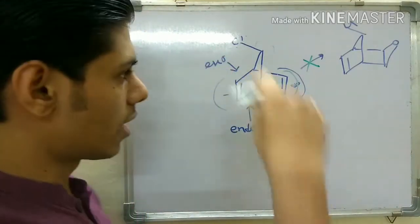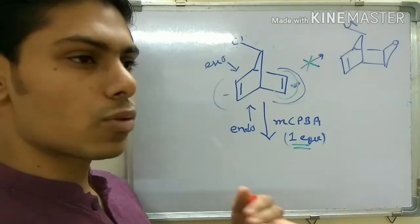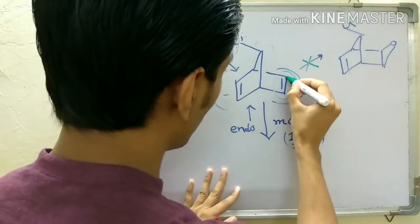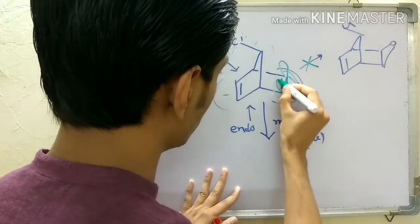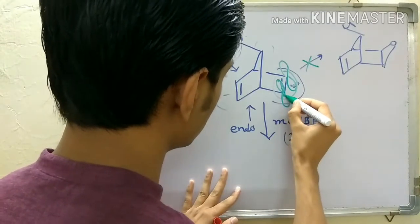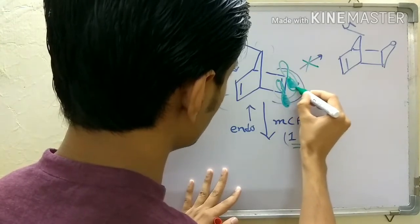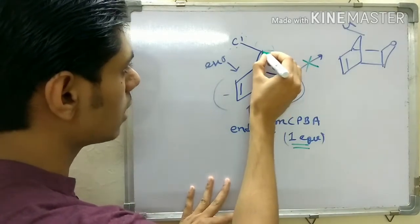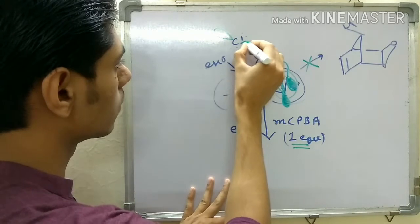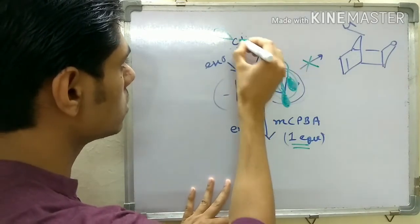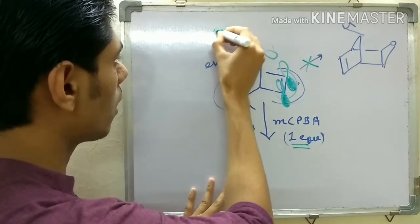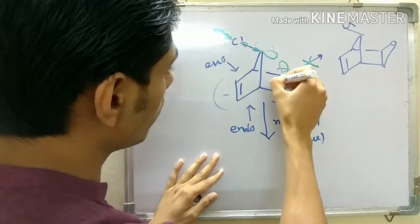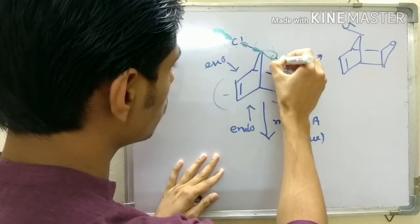In this case, besides the steric hindrance to approach of the nucleophile, there is another important factor which is most important here. If you draw the orbitals - the pi bond - these are the two p orbitals which form this pi bond. Now you have the C-Cl bond LUMO over here. This is your C-Cl LUMO. You can see these orbitals are perfectly oriented to interact with this LUMO.